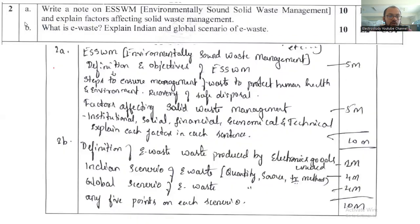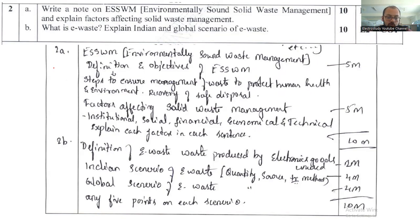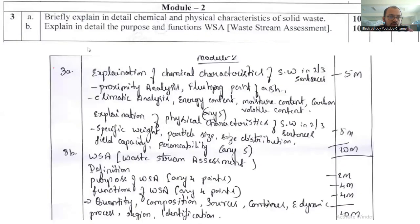Question 2b asks you to define e-waste and explain the Indian and global e-waste scenario. E-waste is the material that becomes obsolete once electronic equipment or technology is outdated. Examples include computers, DVDs, televisions, and home appliances. For the Indian and global scenario, mention how much waste is recovered and the growth of e-waste production. Total weightage is 10 marks.